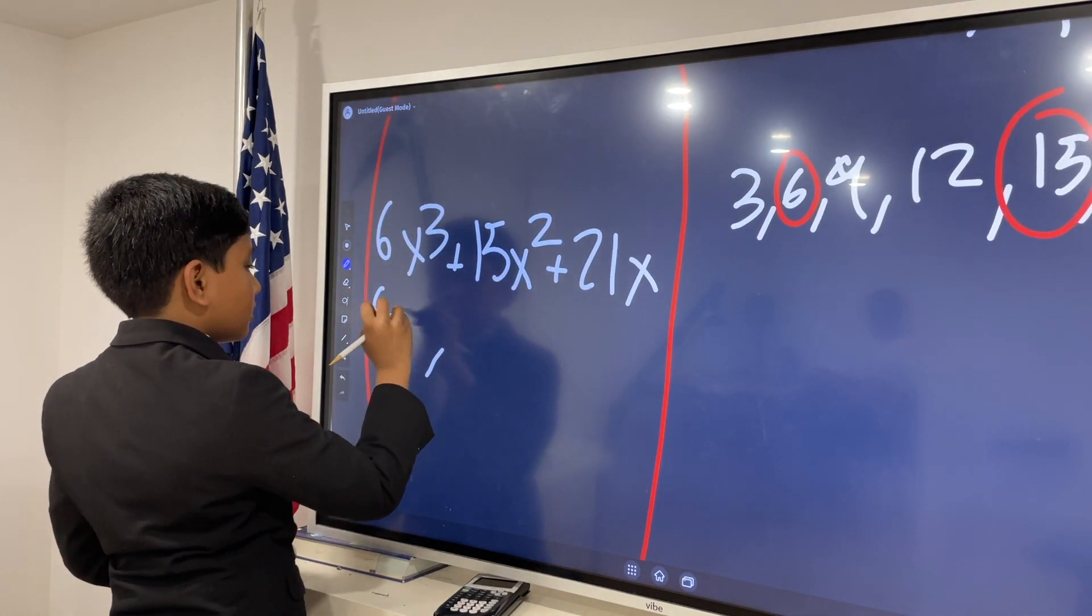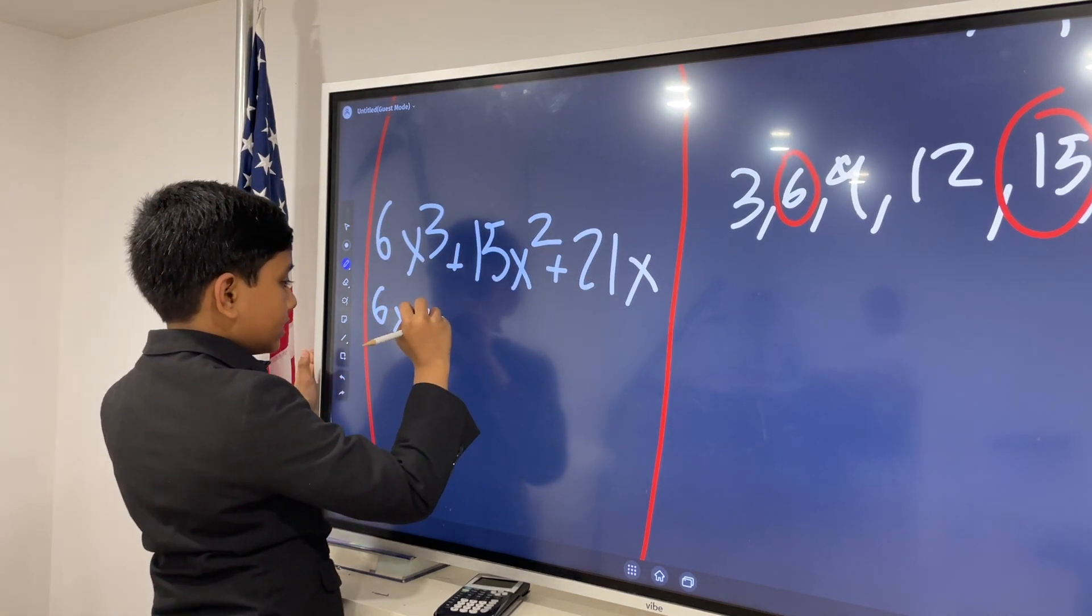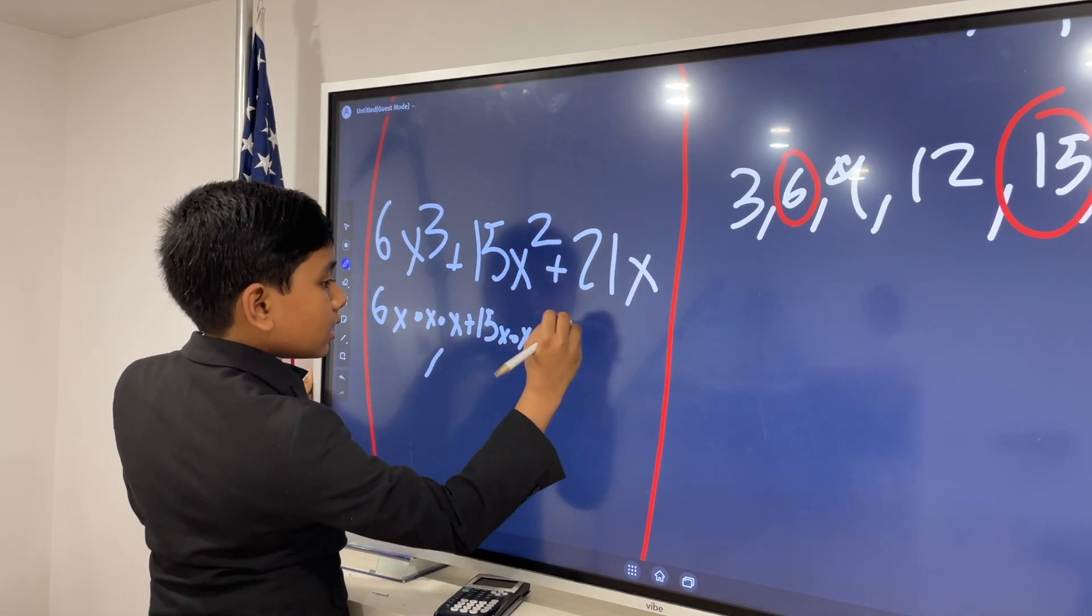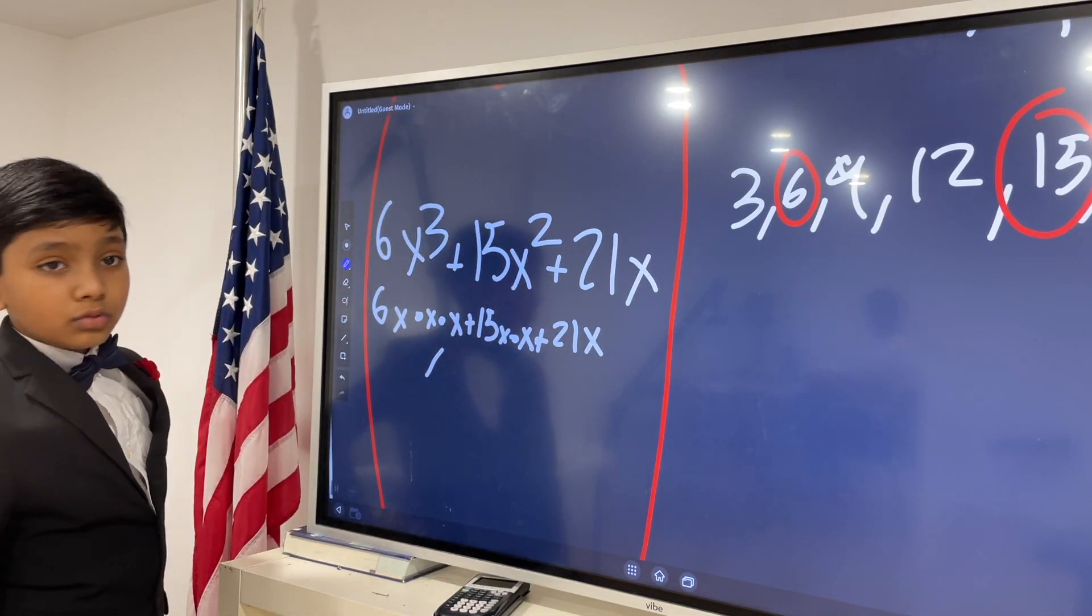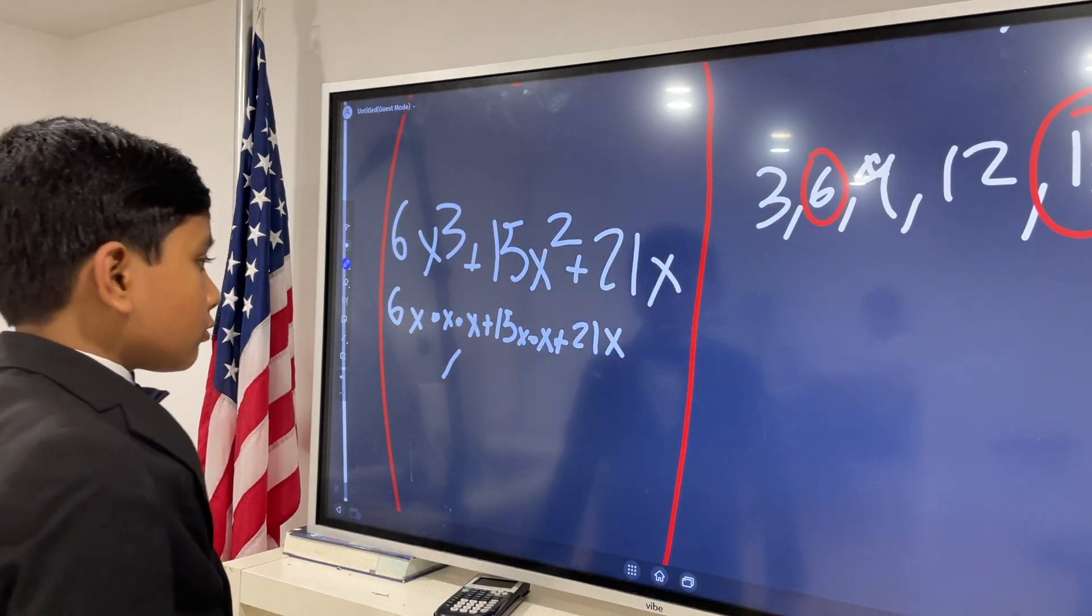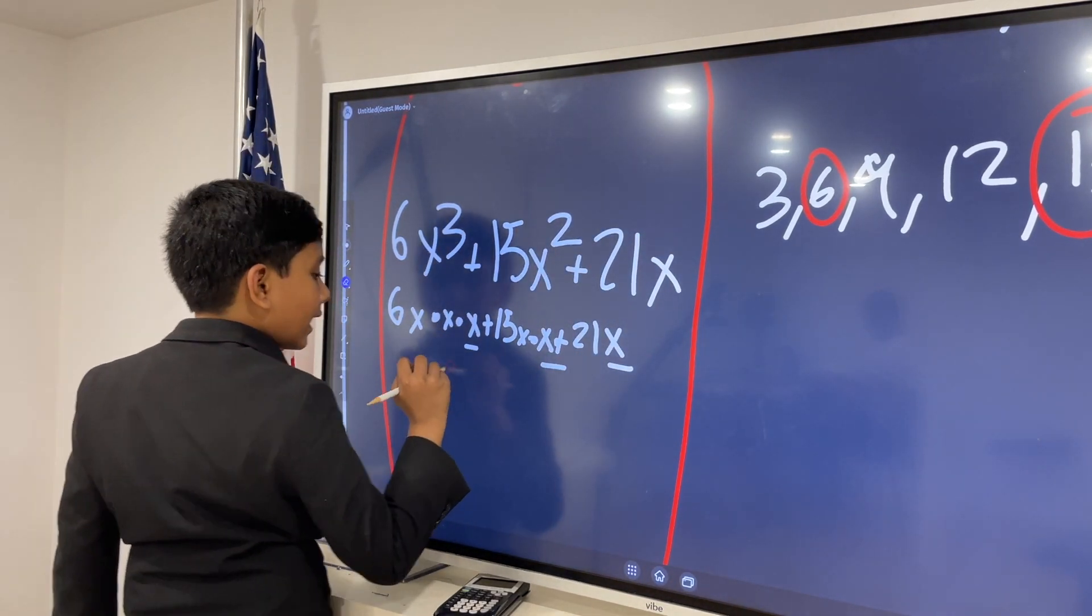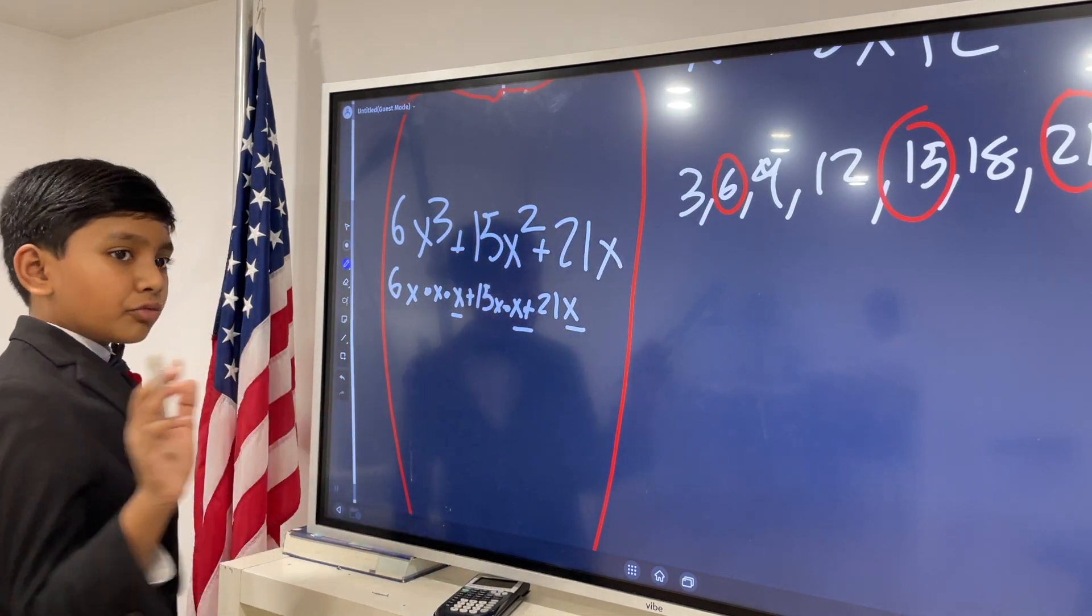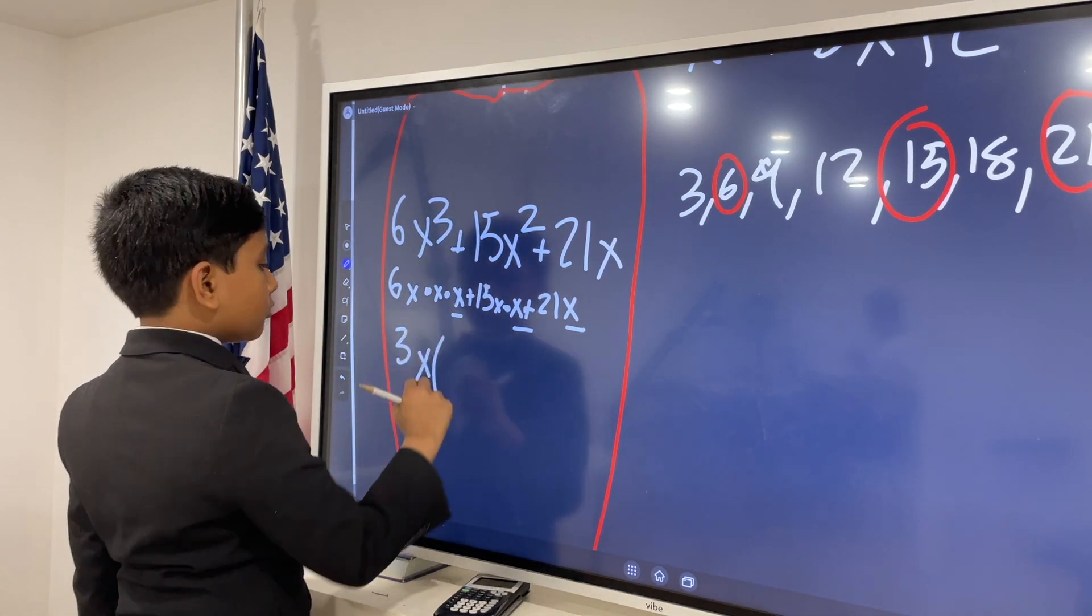However, there's also something else that we can factor out. Let's give you a hint. x cubed is simply x times x times x. 15x squared is simply x times x. Now, do you see what the greatest common factor is? Notice that they're not just all multiples of 3, but they all have one x in them, or at least one x in them. So, that means that we're going to factor out that 3 and that x, or 3x.